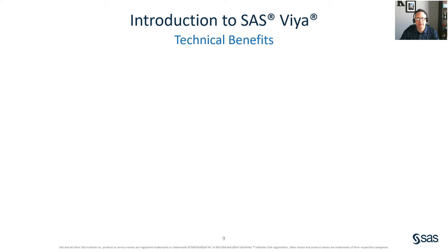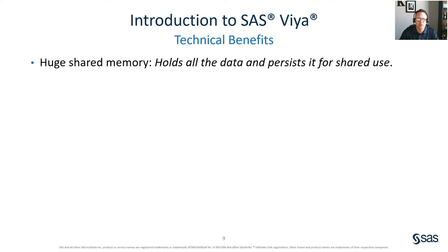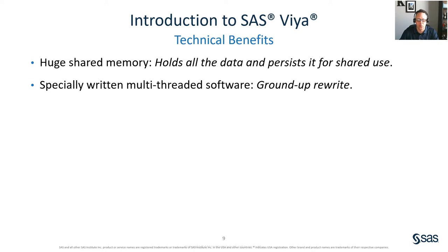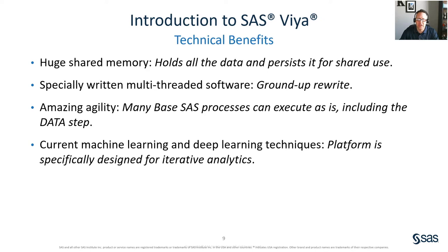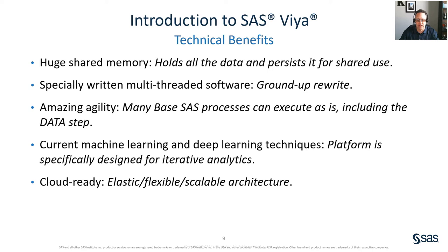What are some of the technical benefits of SAS Viya? First, it provides a huge amount of shared memory — it holds all of the data and persists it for shared use. Second, it's a specially written multi-threaded software written from the ground up. It provides amazing agility; many base SAS processes can execute as is, including the data step. It provides current machine learning and deep learning techniques, and the platform is specifically designed for iterative analytics. It's also cloud ready — elastic, flexible, and provides a scalable architecture — and provides increased accessibility with the flexibility to use the interface of your choice.